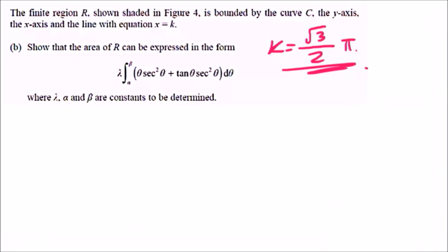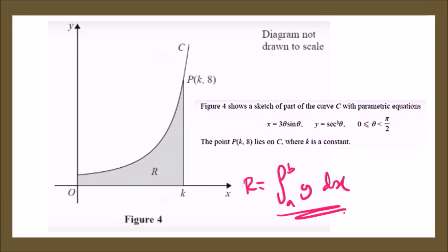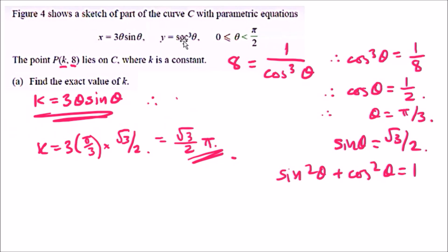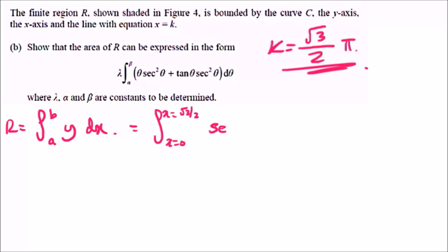So we begin with the area of R equals the integral of y dx. We just need to replace components — a and b are x values. From the graph, the x limits are 0 and k, and we found k = π√3/2. We already know our y value from the parametric equation: it's sec³θ. So we have the integral from 0 to π√3/2 of sec³θ dx.